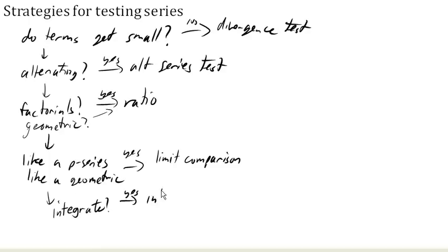But most of the time, we don't need to do that because we can use one of these previous tests. You could also, if maybe there's something like a cosine term in there, maybe we can go to a direct comparison.